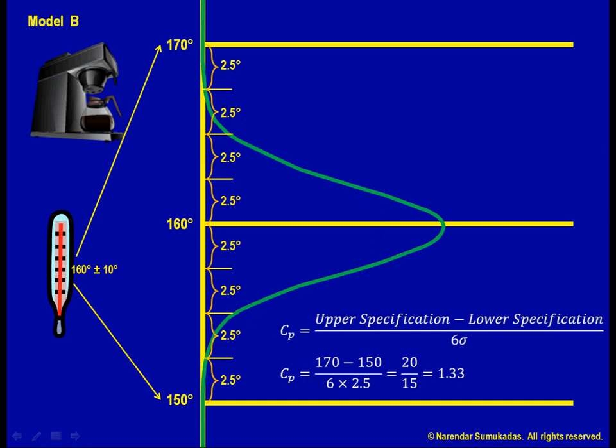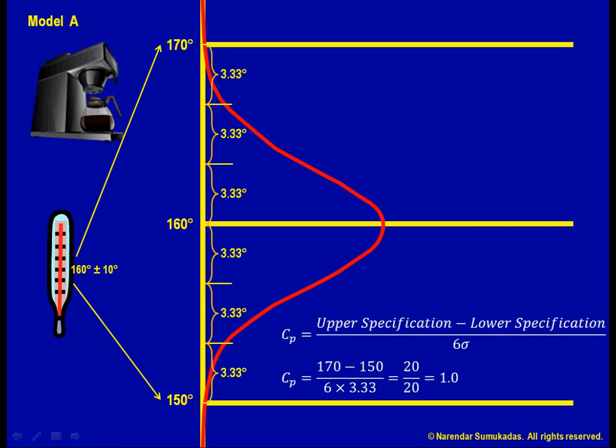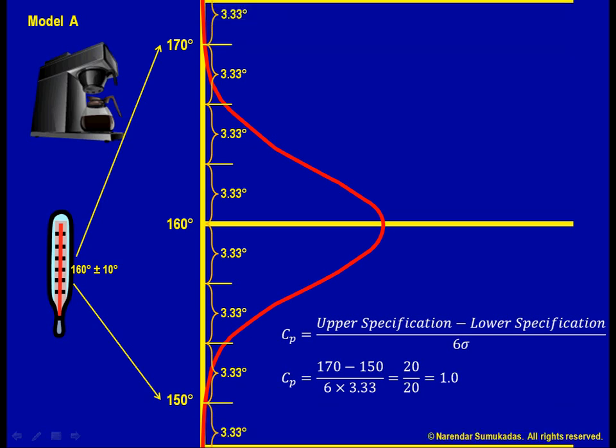Another possible way to increase process capability is to widen the range we offer the customer so that we can fit more standard deviations within it. Even with the Model A machine and a standard deviation of 3.33, I could achieve a CP of 1.33 by increasing my advertised temperature range to 160 degrees plus or minus four standard deviations.